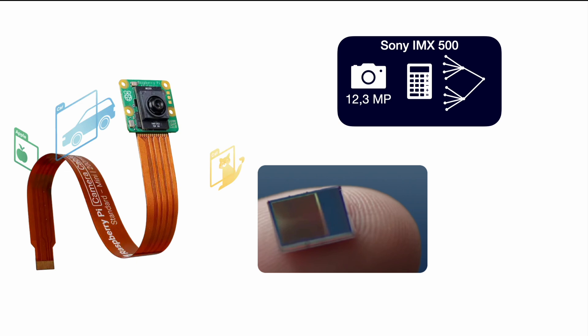This whole setup — doing all the AI processing at the very end of the chain, on the sensor itself, no matter if it's a camera or any other object detection — is called Edge AI. You're doing all the AI at the edge, on the very last device where the system interfaces with reality. Since this is the unique selling point of the IMX500 and the Raspberry Pi AI camera, let's dive a little deeper into how it works and why it's important.